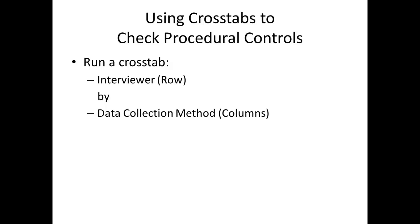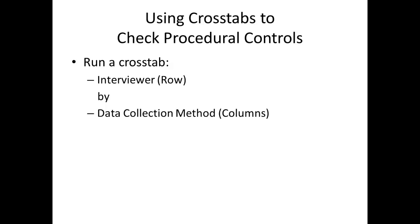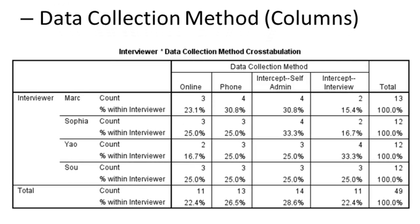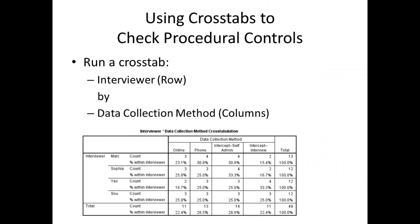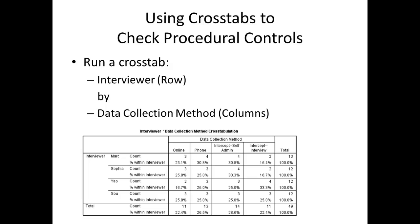One thing we can use cross-tabulation analysis for is to check procedural controls. I'm asking you to run a cross-tab with interviewer in the row box by data collection method in the columns box. That produces a table showing how many interviews of each type each person in the group completed. For example, Mark completed three online interviews, four telephone interviews, four intercept self-administered interviews, and two intercept interviews, for a total of 13. You can make the same comparisons for all interviewers to confirm that everyone did what was expected.